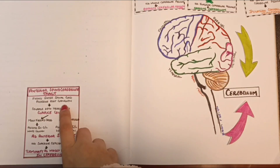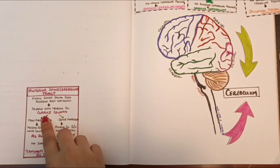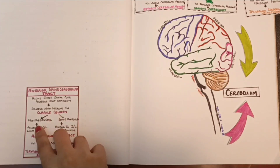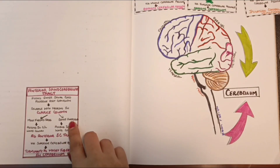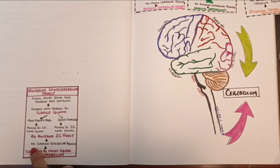The anterior spinocerebellar tract initiates when fibers carrying information from muscles and joints enter the spinal cord via the posterior root ganglion. From here they enter the posterior gray column, where they synapse with neurons in the nucleus thoracis, also known as Clarke's column, at the base of the posterior gray column. Most of the fibers then cross and ascend in the contralateral white column of the spinal cord, while some fibers remain uncrossed and ascend in the ipsilateral white column. Ultimately all these fibers ascend as the anterior spinocerebellar tract and enter the cerebellum via the superior cerebellar peduncle, terminating as mossy fibers in the cerebellar cortex.